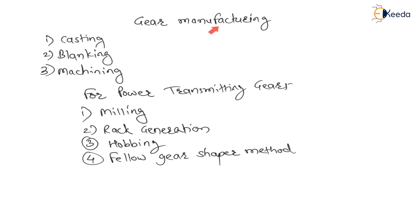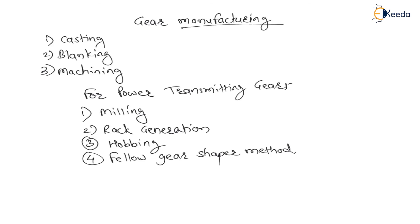For gear manufacturing, there are various methods — gears can be made with the help of casting, blanking, or machining. However, if the gear is made for power transmission, then compulsorily the manufacturing uses milling, rack generation, hobbing, or the fellow gear shaper method. We are not going to explain all these methods here because they are topics of your manufacturing and production technology subject, which carries 15 marks in the GATE syllabus. You will learn all these manufacturing processes in detail in that subject.